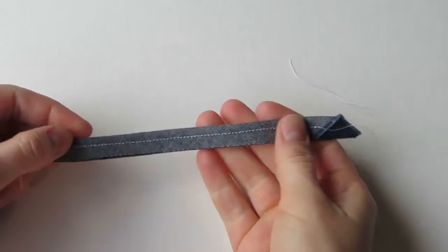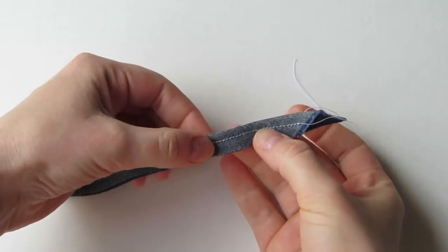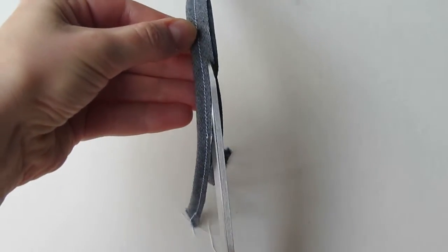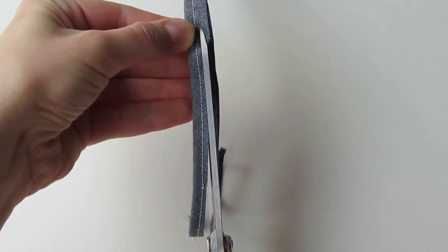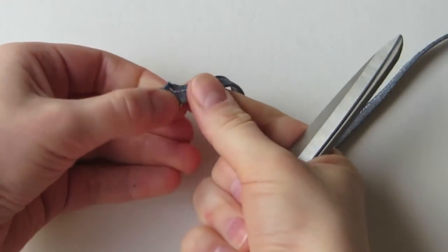To turn your bias strip into a tube, fold it in half with the right sides together and then stitch a shy quarter inch away from the folded edge. Cut off the extra seam allowance right next to the stitching. You want to leave about an eighth of an inch of seam allowance. Cut a tiny snip into one end of the tube.